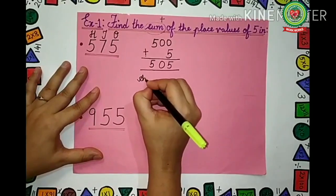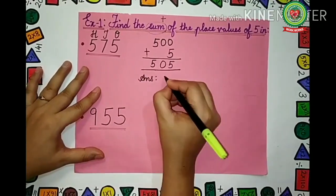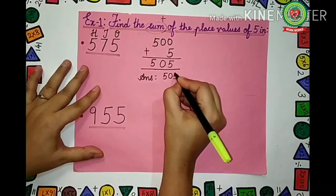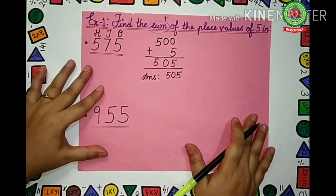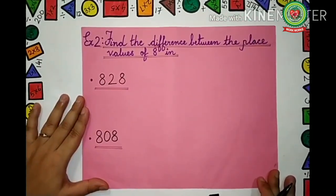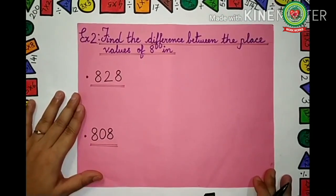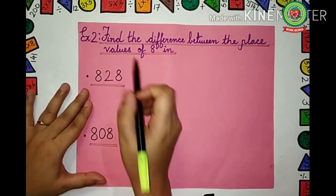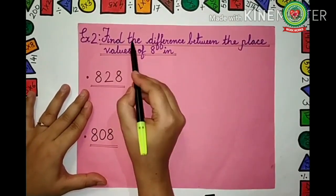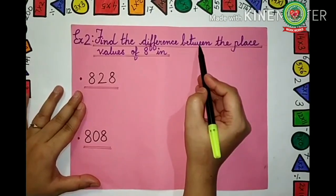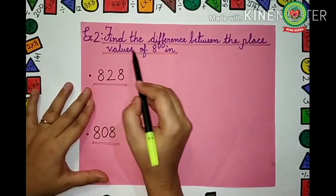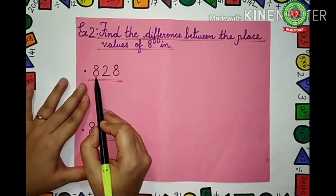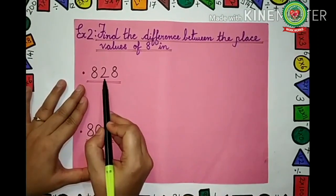So what is our answer? The answer is 505. Now let us move on to the next exercise. Read the question with me: Find the difference between the place values of 8 in this number — that is 828.